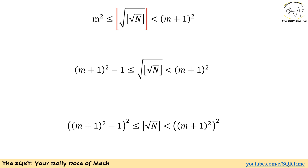Now we are going to remove the next floor function shown in red. The whole expression is between m squared and (m+1) squared. Since we are interested in finding the maximum possible value of n, we keep the right-hand side of this inequality and ignore the other side. We know the expression is less than (m+1) squared, so after removing the floor function it is greater than or equal to (m+1)² minus 1 and still less than (m+1)².